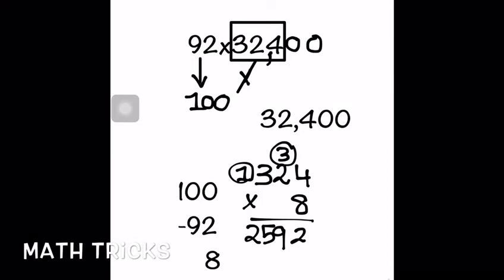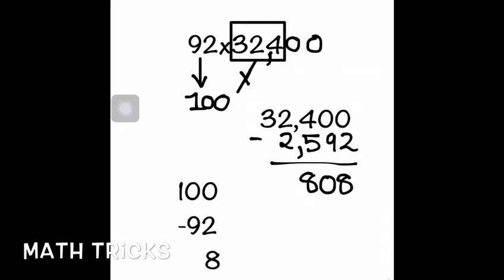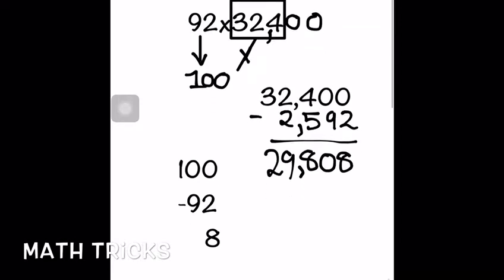Now, as I told you before, for numbers below 100 you have to subtract. So you take the 32,400 and subtract 2,592 from it. The answer is 29,808. This is the answer to the whole problem: 92 × 324 = 29,808.